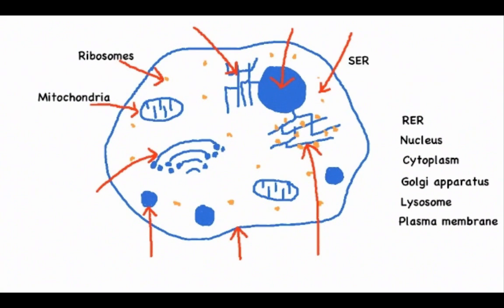Then you have the smooth endoplasmic reticulum or SER, and this is an interconnected network of tubules but it doesn't have any associated ribosomes. In contrast, the rough endoplasmic reticulum RER does have associated ribosomes, so I've put my orange dots around those tubules.